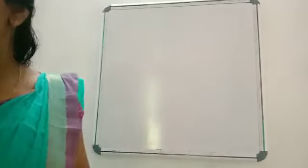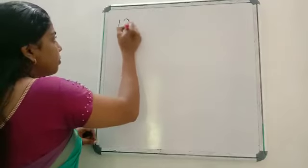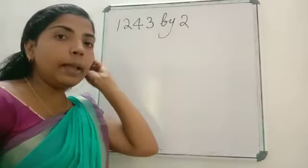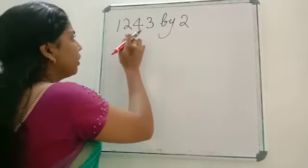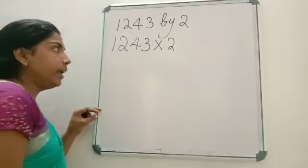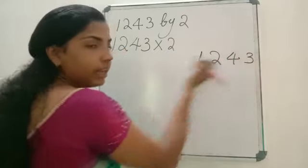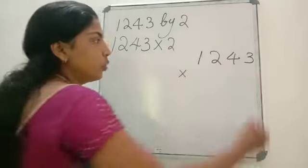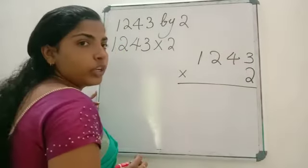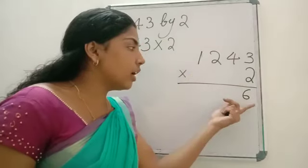Next we are going to study 4-digit number by 1-digit number. For example, 1,243 by 2. As we did earlier, we write this question: 1,243 into 2. Now we can just multiply directly. First write the largest number, 1,243, then the next number 2. You have to write the 2 just under the 1's place. Now we are going to multiply. 2 into 3 — you have to multiply this 2 with each number and write it according to its place value.